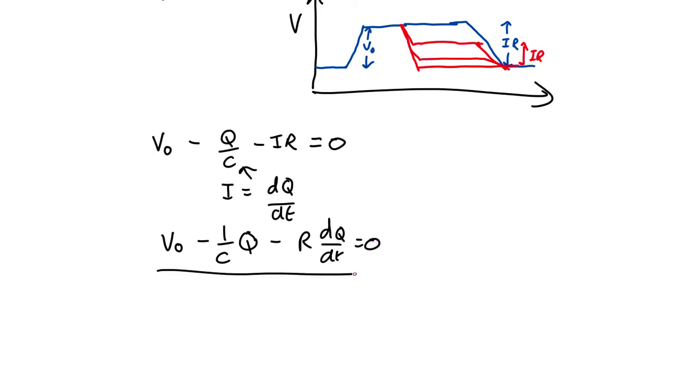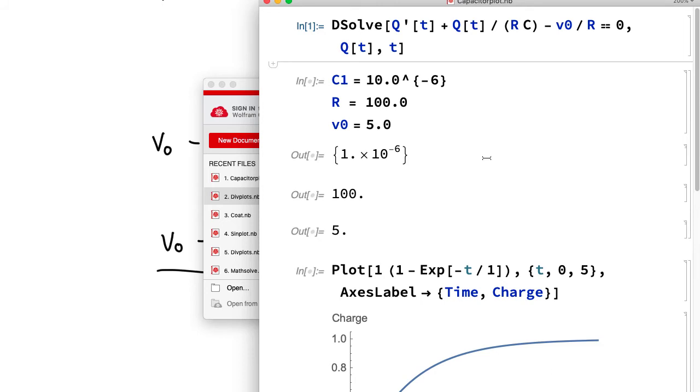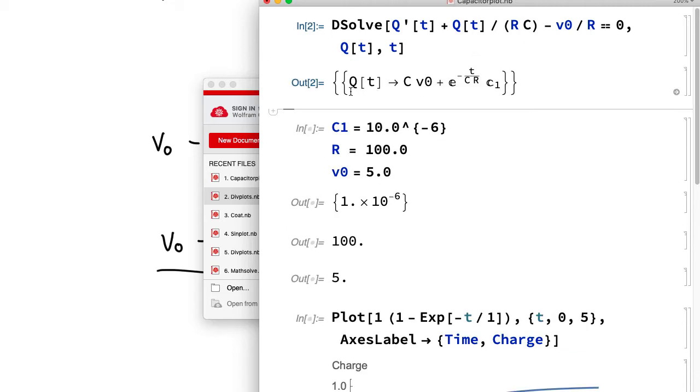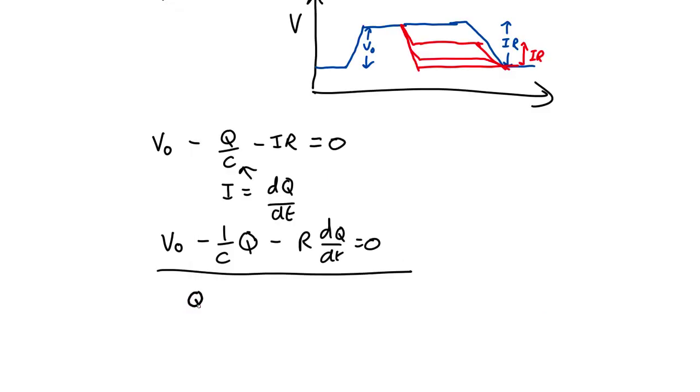Now the only variable is the charge on the capacitor. So we can solve this. The trouble is, it's a differential equation. First order one, not that hard to solve. But that's something you'll do in second year mathematics. For the moment, let's do it using Mathematica. So here's the equation. Q prime t means dQ by dt. I've rearranged it slightly. And if we solve that, we find that the charge is equal to C times V0 plus e to the minus T over CR times constant.